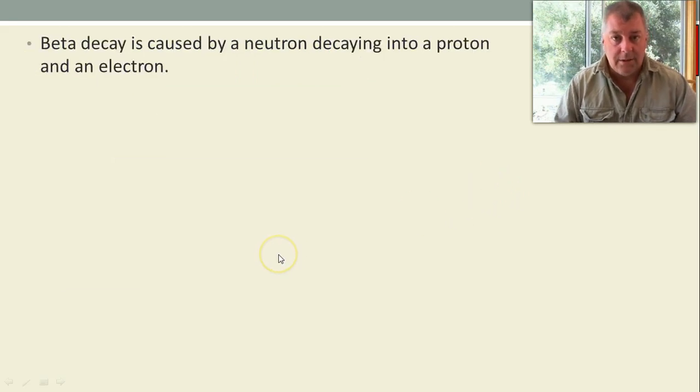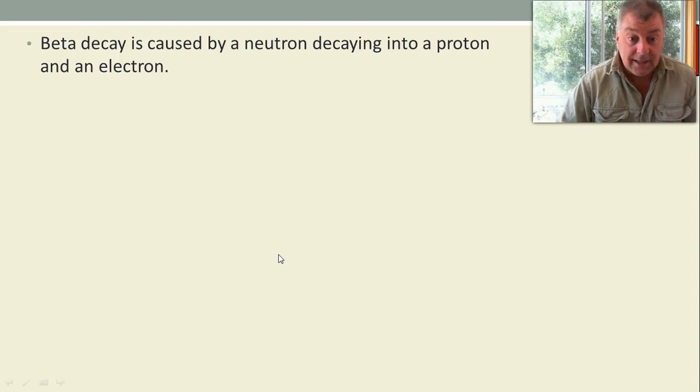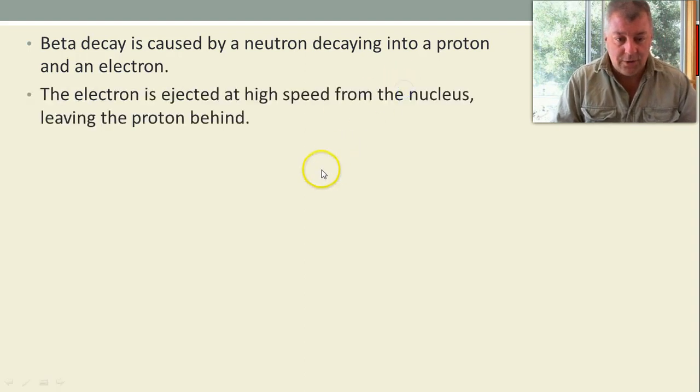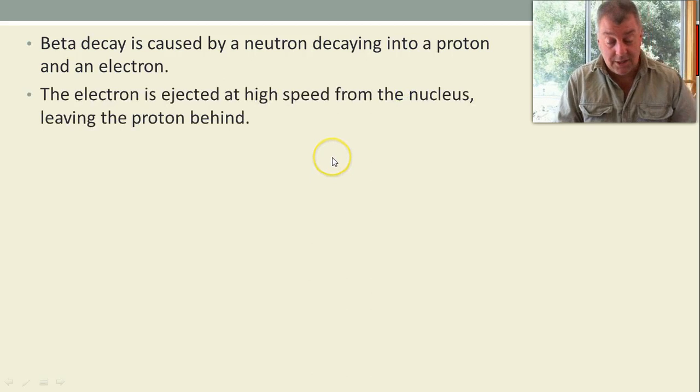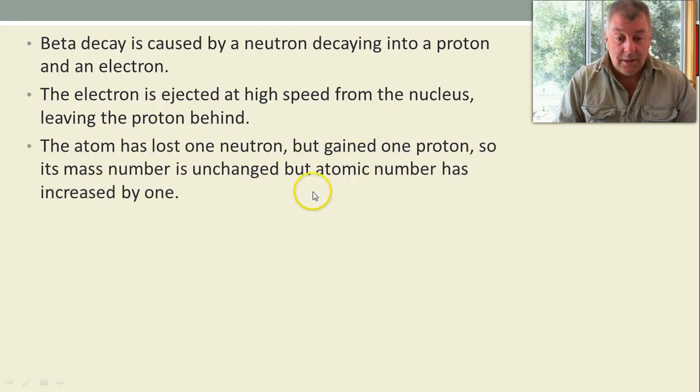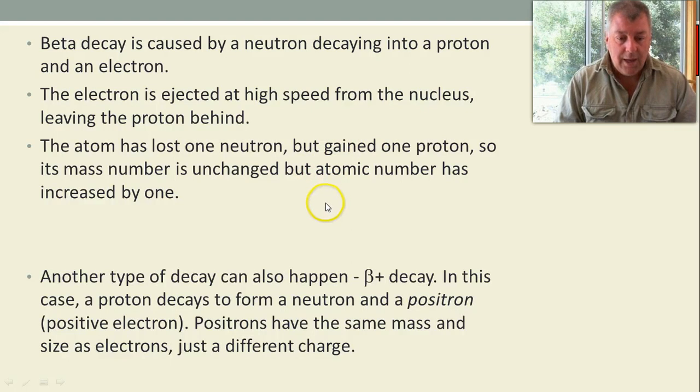Beta type, so let's learn a little bit about beta decay. Well, we already know that it's a neutron decaying to a proton and an electron. It's ejected at high speed, because it doesn't belong there, it just gets kicked out. And at about 90% of the speed of light, we change the mass number and the atomic number accordingly, and another type, beta plus decay.